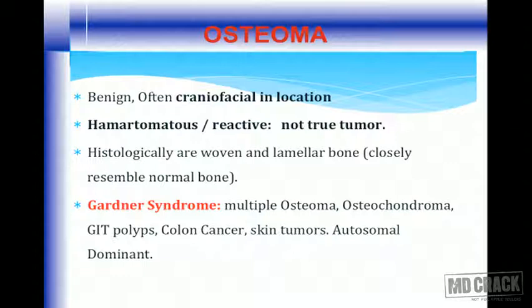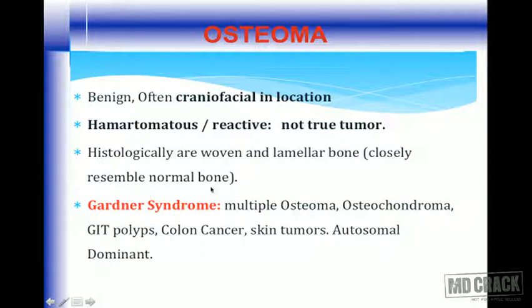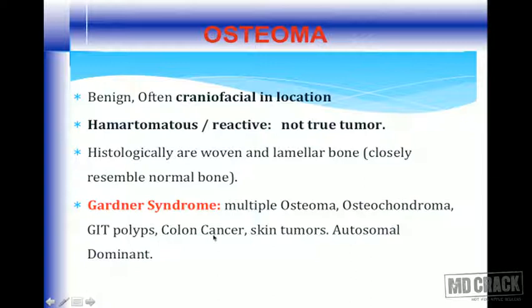Osteoma is a benign bone-producing tumor, most commonly craniofacial in location. It may be a hamartoma or reactive process, and is not a true tumor. Histologically it consists of woven bone and lamellar bone, closely resembling normal bone, making radiological assistance essential. Patients with multiple osteomas should be evaluated for Gardner syndrome — associated with gastrointestinal polyps (which can turn malignant into colon cancers), skin tumors, and osteochondromas; transmitted in autosomal dominant fashion.